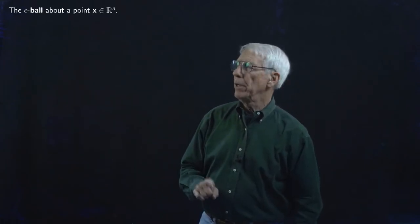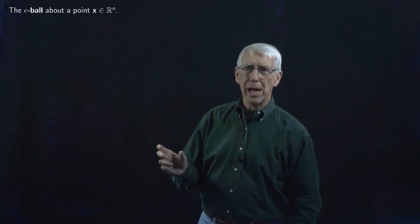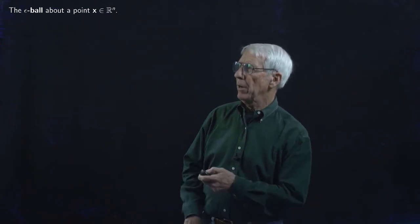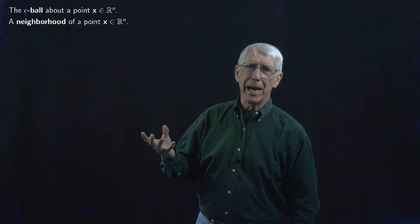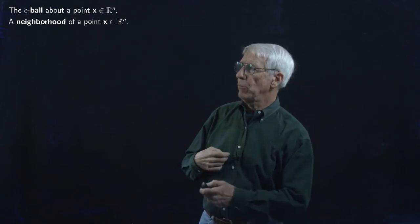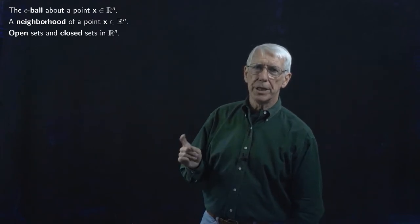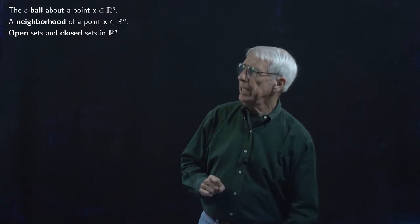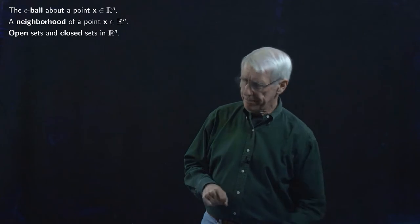Hi guys, we're back now for part three of Euclidean Space. For this part, we are going to be talking about the notion of the epsilon ball around a vector or a point in Rn. We're also going to be talking about the same idea with a different name: a neighborhood of a point in Rn. And we're going to be talking about open and closed sets. Let's start right in with the notion of the epsilon ball.